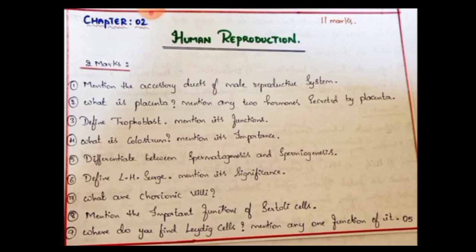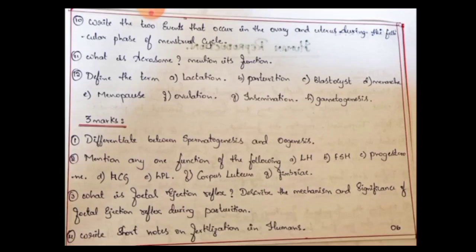Differentiate between spermatogenesis and spermiogenesis — this difference is very important. Spermiation, spermiogenesis, and spermatogenesis — these three concepts are often confused. Next: Define LH surge and mention its significance and importance. Next: What are chorionic villi? Mention the important functions of Sertoli cells. Next: Where do you find Leydig cells? Mention any one function — this is an expected one.